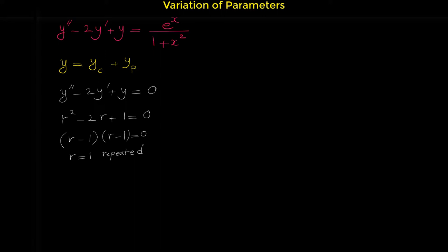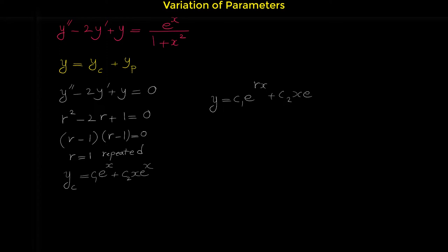It's very important to recognize repeated roots. When we have repeated roots, the complementary solution is C₁e^x plus C₂xe^x. We put the extra x on the second term because of the repeated root. In general, for repeated roots r, the formula is C₁e^(rx) plus C₂xe^(rx). Here R is 1, so this is our complementary solution.